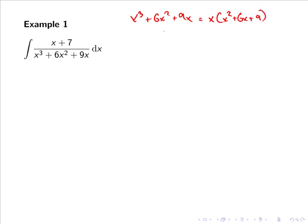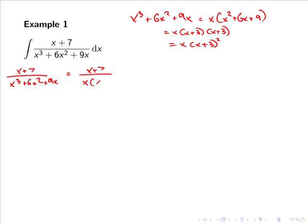Now x squared plus 6x plus 9 is simply x plus 3 by x plus 3, or simply x by x plus 3 squared. So we can express x plus 7 all over x cubed plus 6x squared plus 9x as x plus 7 all over x by x plus 3 squared.